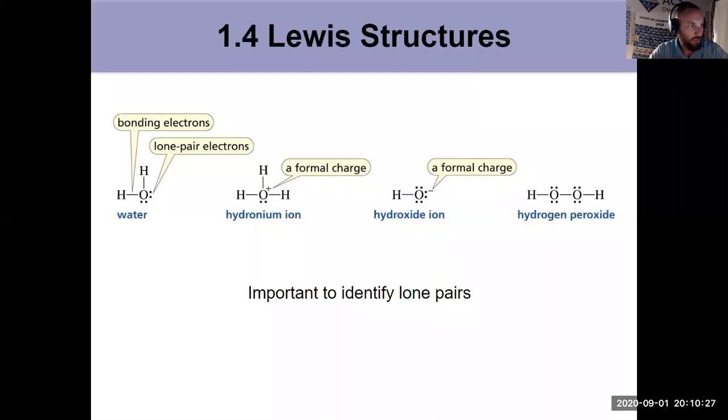Here we see four examples of Lewis structures, some with formal charges, which you should remember how to calculate. We have water, hydronium ion, hydroxide, and hydrogen peroxide. This helps us identify lone pairs and see how things are bonded - single bond, double bond, triple bond, and if we have any resonance. But what a Lewis structure doesn't do is identify the bond angle. We'll talk about other types of structures that can help with that.